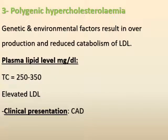The third form is polygenic hypercholesterolemia. Here, the patient has genetic and environmental factors resulting in overproduction and reduced catabolism of LDL. The patient presents with total cholesterol ranging from 250 to 350 mg/dL and elevated LDL. The clinical presentation is in the form of coronary artery disease.